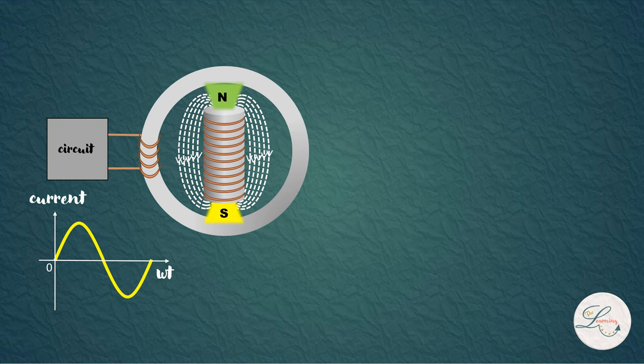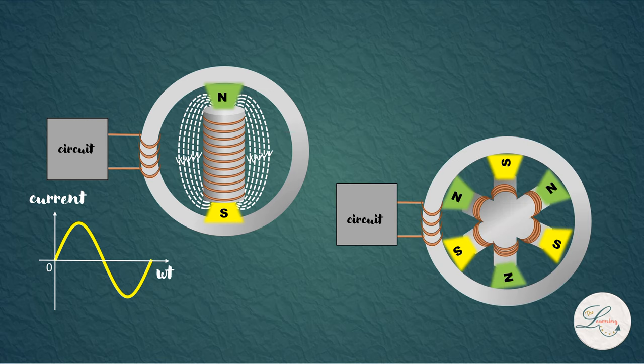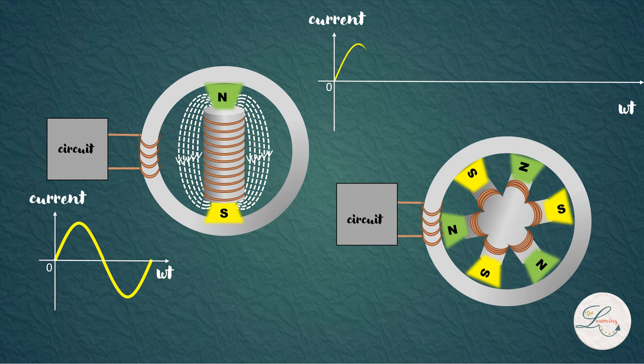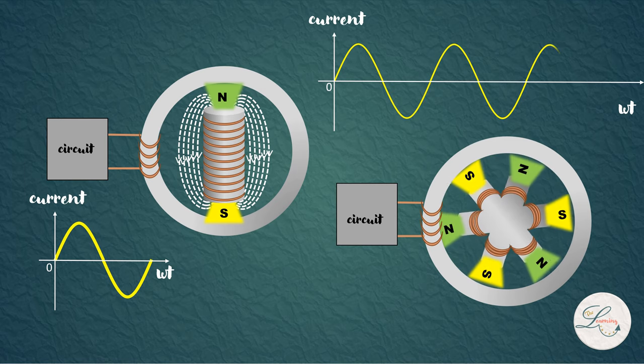Here one cycle of current is produced for each revolution of the rotor. So we can understand that the frequency of the current generated and the rotor speed are related. But not all rotors are built like this, that is with one north pole and one south pole. For example, here we have three north poles and three south poles. So here each revolution produces three cycles of current.